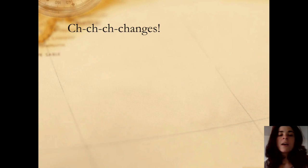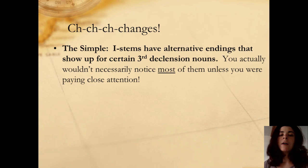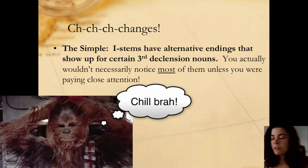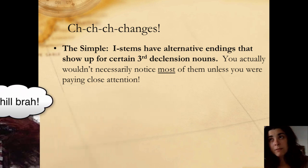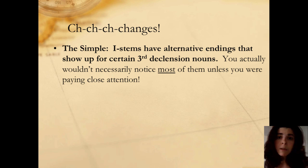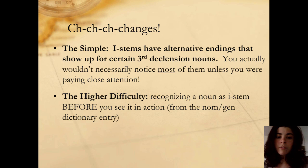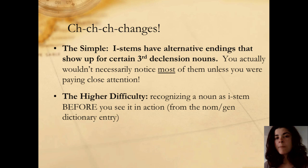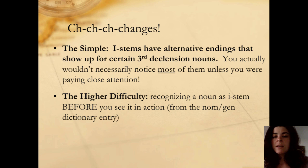Let's take a look first at what a third declension i-stem is. Essentially, the simple rule is that a third declension i-stem is a noun that has slightly tweaked endings. For the most part it looks exactly the same, and you probably won't even notice the difference between an i-stem and a non-i-stem word.